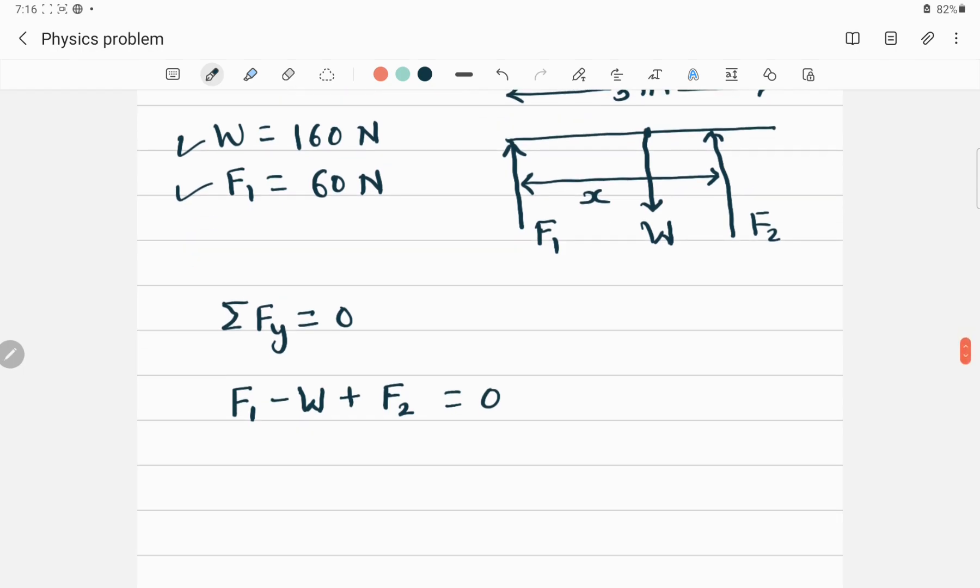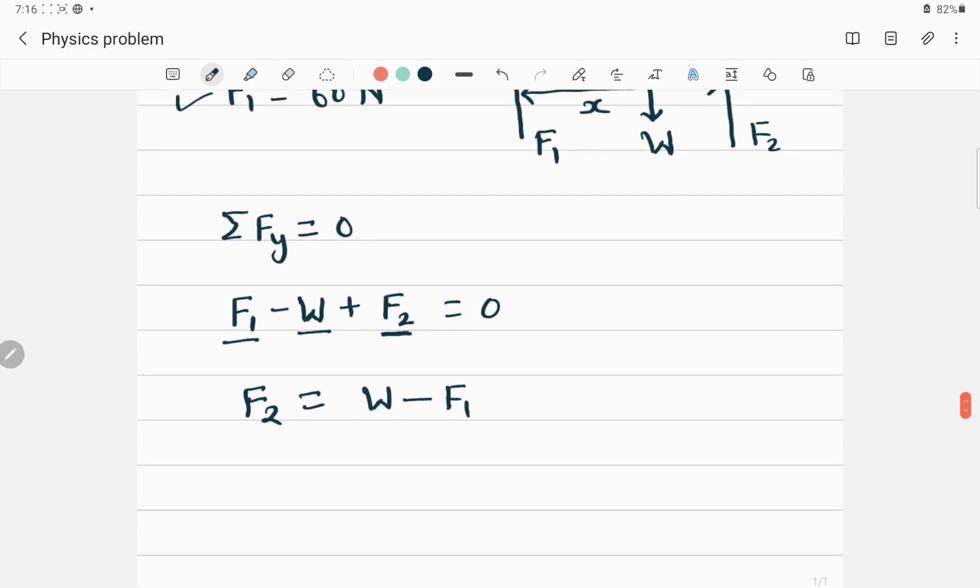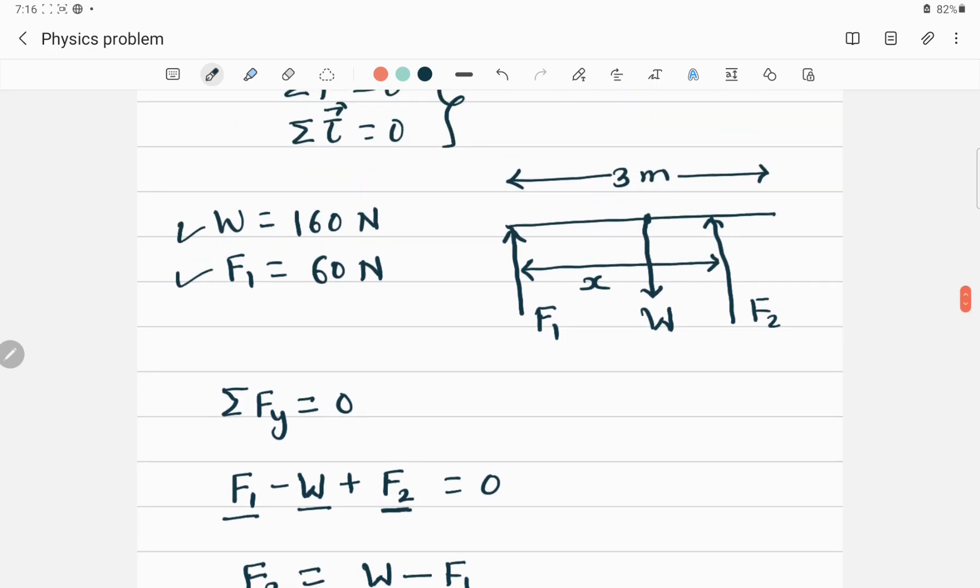From here, F1 and W are given. We just have to calculate F2. F2 is equal to W minus F1. If you put all the values here, W is 160 Newton minus 60 Newton, this gives you 100 Newton. That is the force needed to balance this wooden board to apply in this direction.